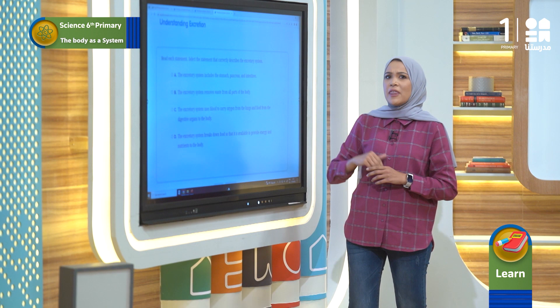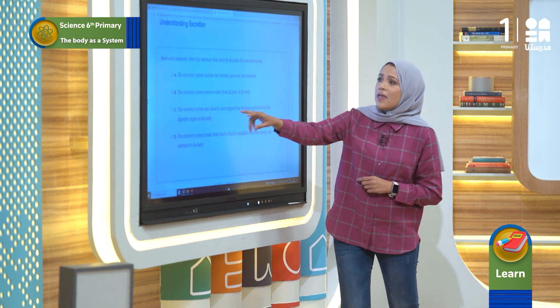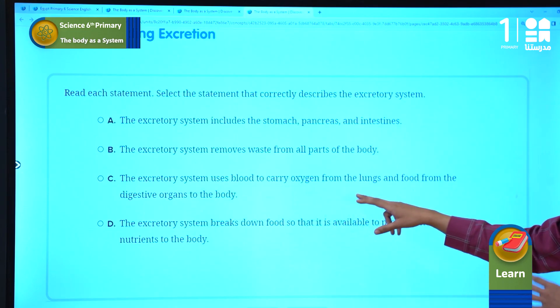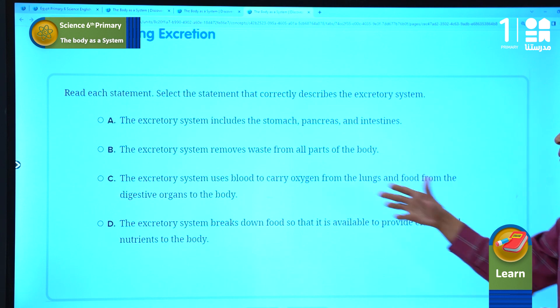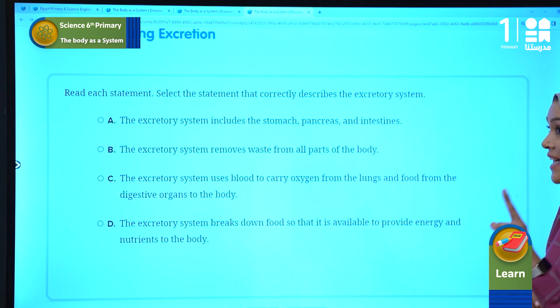The excretory system uses blood to carry oxygen from the lungs and food from the digestive organs to the body. Blood is a part of the circulatory system, so this is not the right answer.